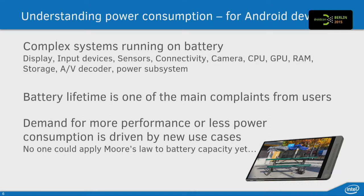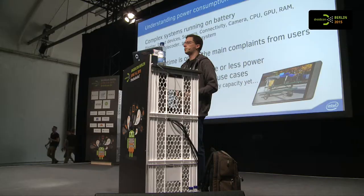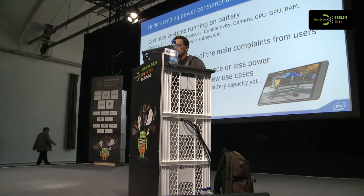With Android, you've got display, input devices, sensors, touch screens, several layers of connectivity — 3G, 4G, WiFi, Bluetooth — you've got cameras, CPU, GPU and RAM as usual, different forms of storage, hardware decoders, and specific power subsystems: battery and charging system.